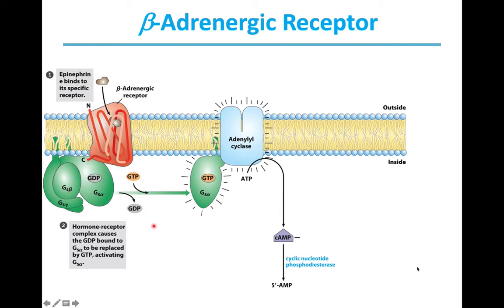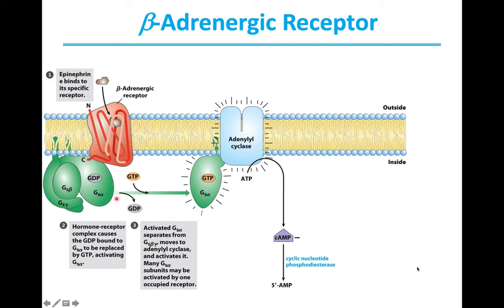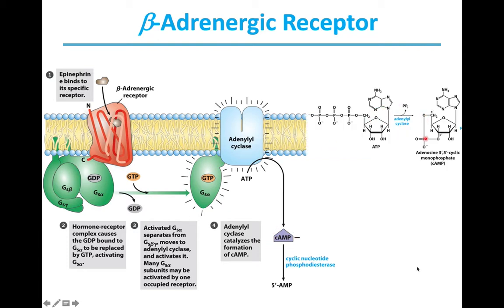As a result of GTP binding to Gs-alpha, the Gs-alpha subunit is activated. It separates itself from the beta and gamma subunits and moves towards adenylyl cyclase, an enzyme also embedded on the plasma membrane. Once Gs-alpha interacts with adenylyl cyclase, the enzyme is activated, resulting in the conversion of ATP to cyclic adenosine monophosphate.